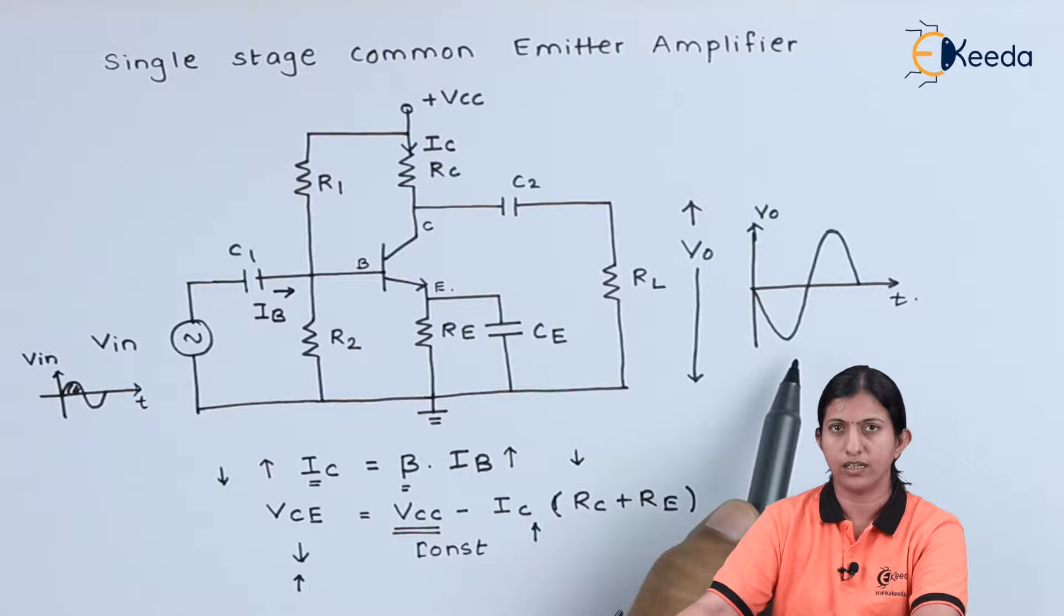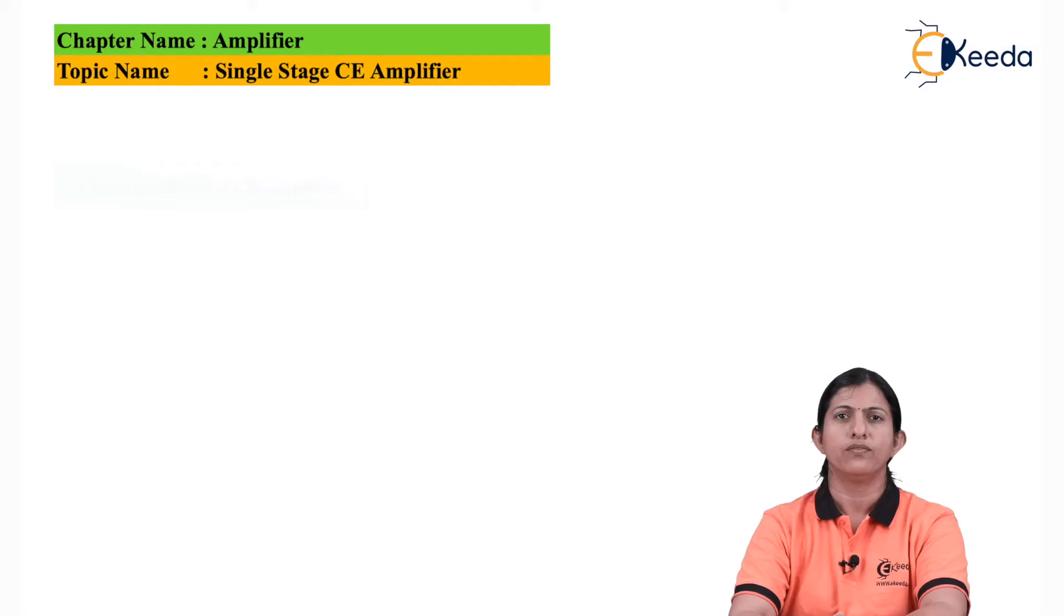That means the signal is amplified by the factor beta, but at the same time we will get 180 degree phase shift between the input and the output signal.